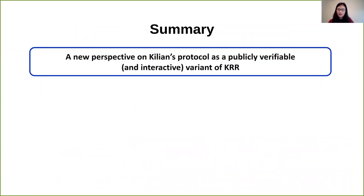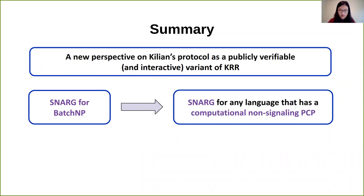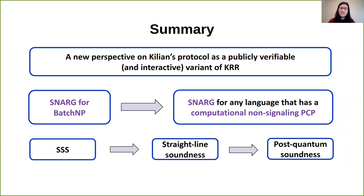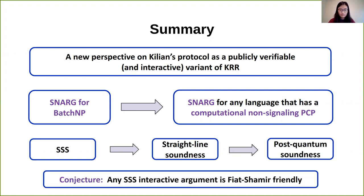To summarize, our key contribution is a new perspective on Kilian's protocol as a publicly verifiable interactive variant of KRR. From this we construct a SNARG for any language with a computational non-signaling PCP from a SNARG for batch NP. We also define the notion of somewhere statistically sound arguments and show this implies straight-line soundness, which implies post-quantum soundness. We also conjecture that any SSS interactive argument is Fiat-Shamir friendly. Thank you for listening.